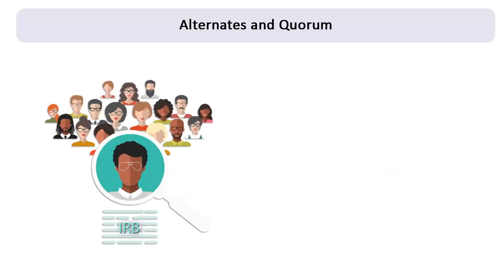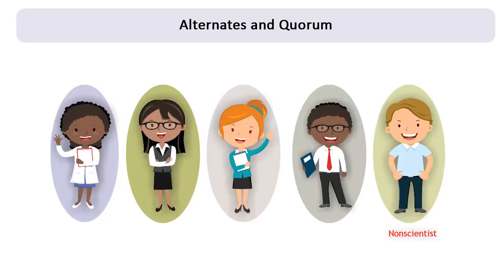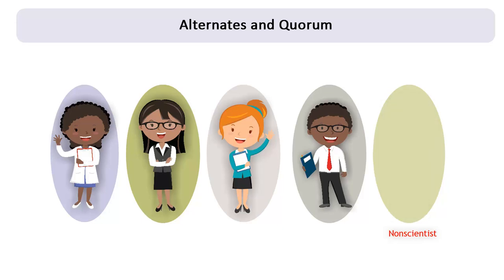As discussed earlier, IRBs may designate alternates for some or all of their primary members to ensure that full board meetings can be convened, even if one or more of the primary members are unavailable. How an institution selects and identifies alternates is left to the institution's discretion, but convened meetings must still meet the quorum requirements, whether the attendees are primary members or alternates. For example, an IRB may designate one or more alternates for their non-scientist members. If a primary non-scientist member cannot attend a meeting, one of the non-scientist alternates can fill the seat and be counted toward the quorum requirements.